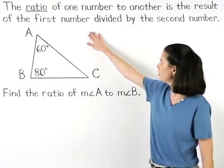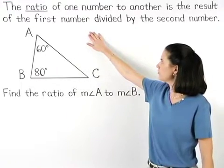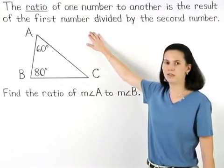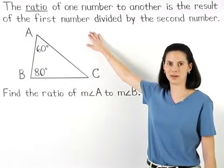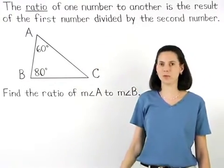The ratio of one number to another is the result of the first number divided by the second number. For example,